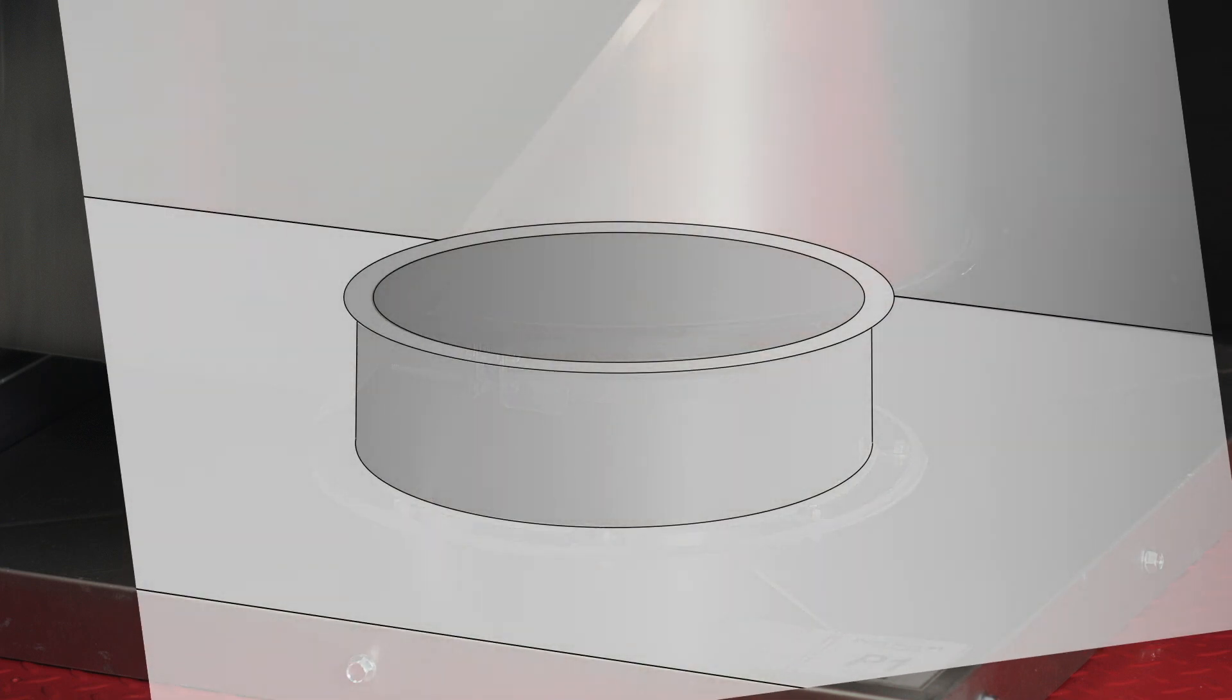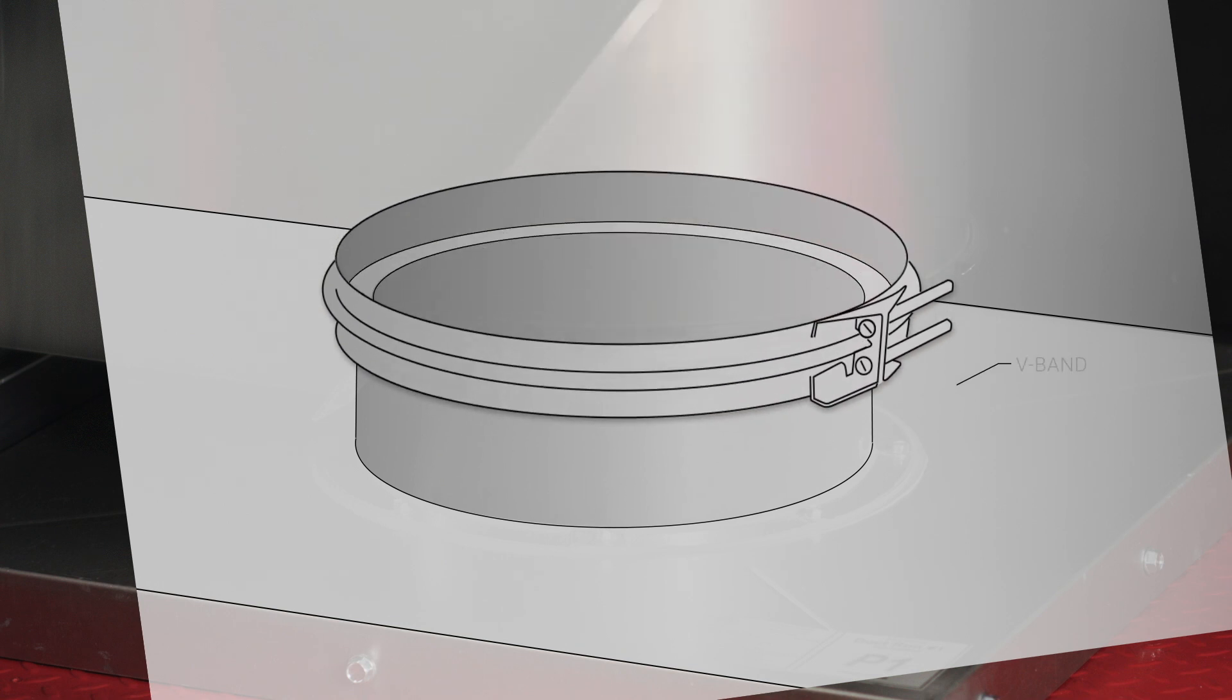Once the riser is attached, place the V-band over the riser, as shown, before installing the next duct section.